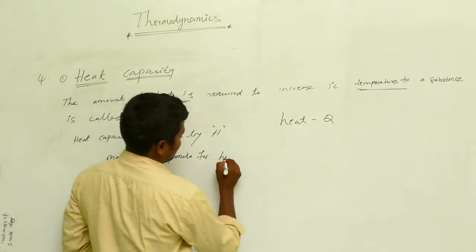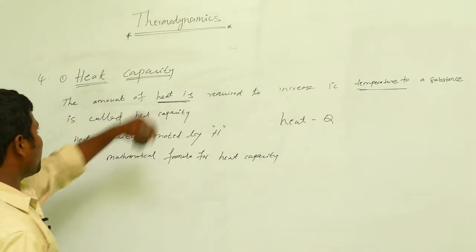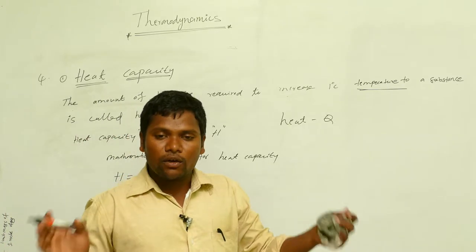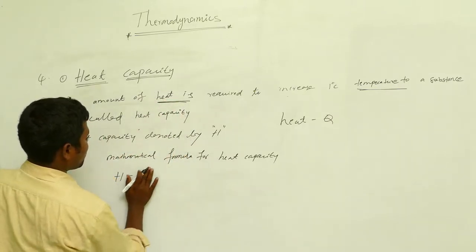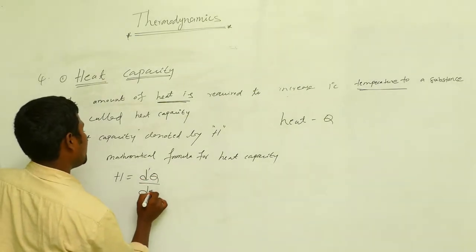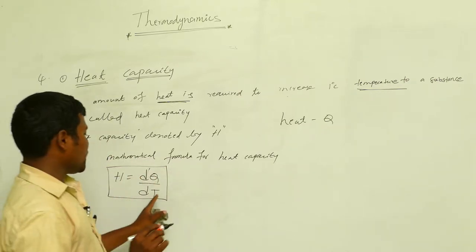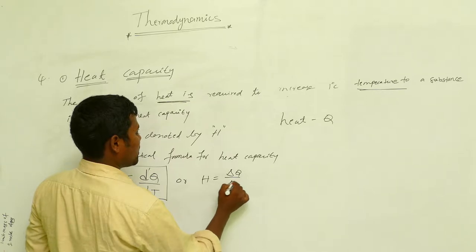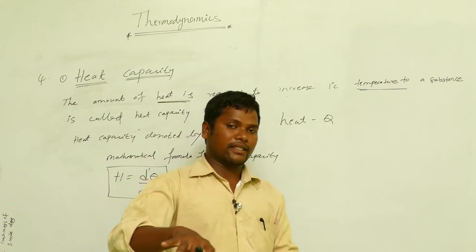The mathematical formula for heat capacity: H is denoted by the letter H. The formula is H = dQ/dT, or sometimes written as H = ΔQ/ΔT. Here Q is the heat applied and T is temperature — when heat is applied, temperature increases, and that relationship defines heat capacity.